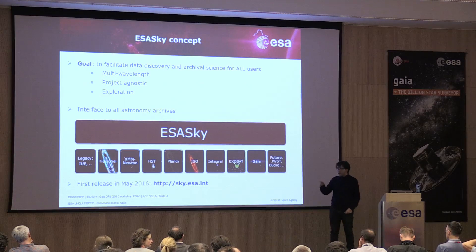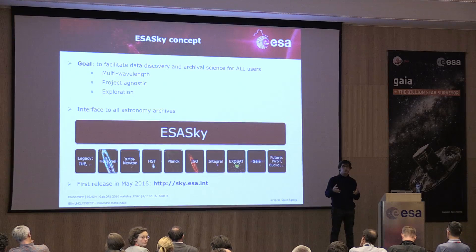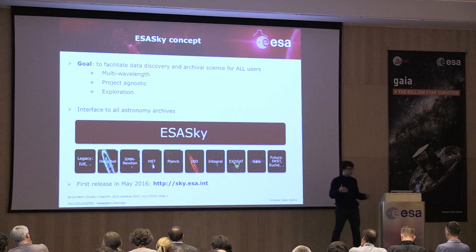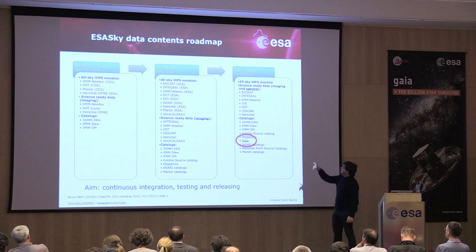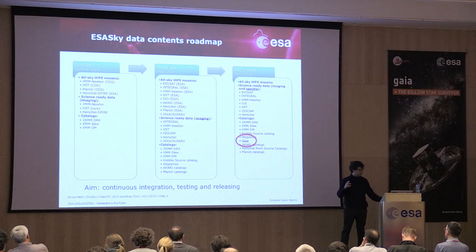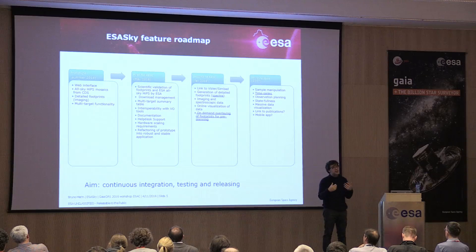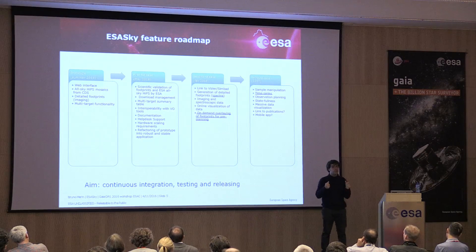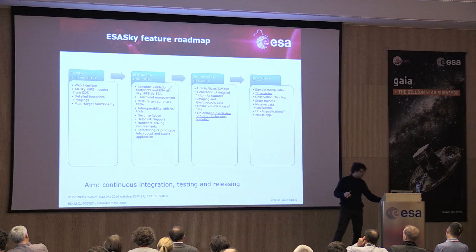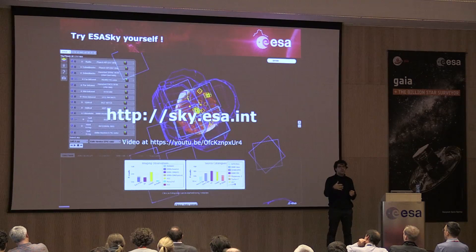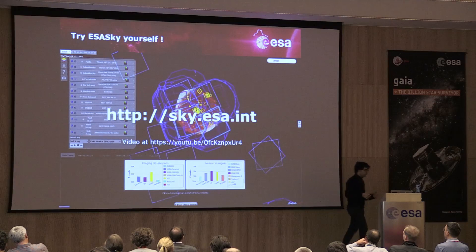The tool was released this May and we welcome you to use it, try it, and let us know how it could be improved for working with Gaia data. A second release is planned by the end of this year containing Gaia data — we already have one of the big catalogs from Data Release 1. Version 1 shows imaging data and catalogs, version 2 will add spectroscopy, and version 3 will have time domain functionality.